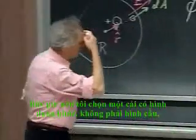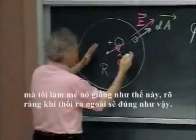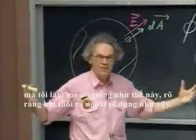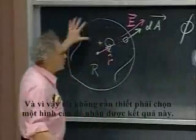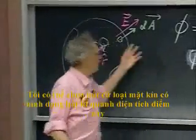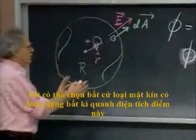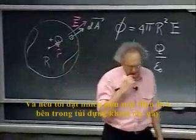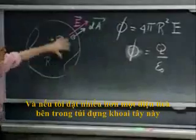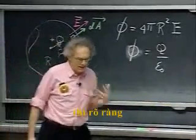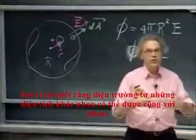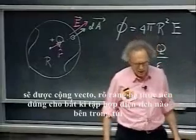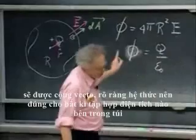Now, if I had chosen some other shape — not a sphere, but I had dented it — it's clear that the air that flows out would be exactly the same. So I don't have to take a sphere to find this result. I could have taken any type of strange closed surface around this point charge and would have found exactly the same result. And if I put more than one charge inside this bag, since electric fields from different charges can be added vectorially, the relation holds for any collection of charges inside.